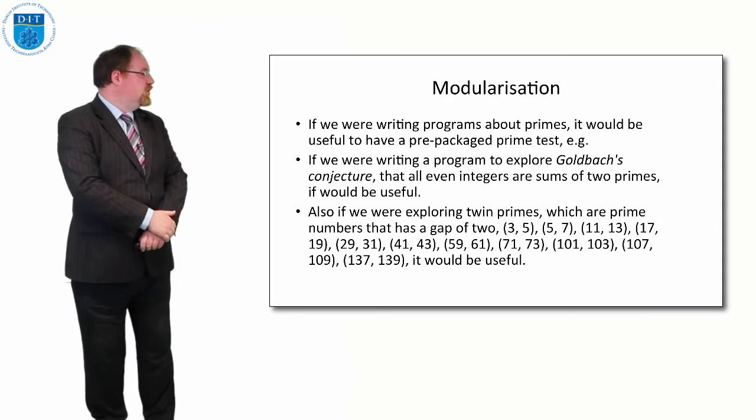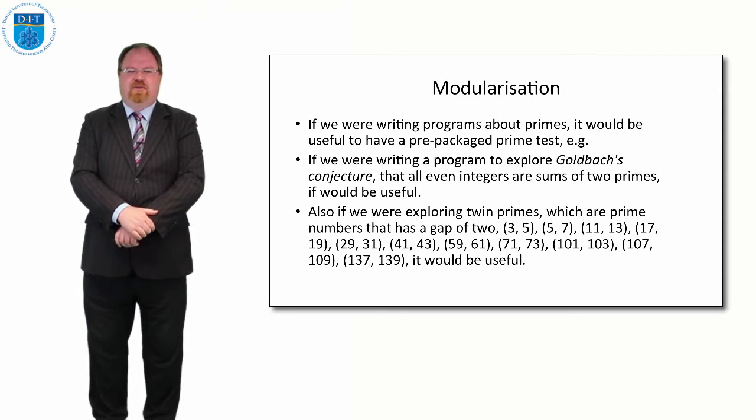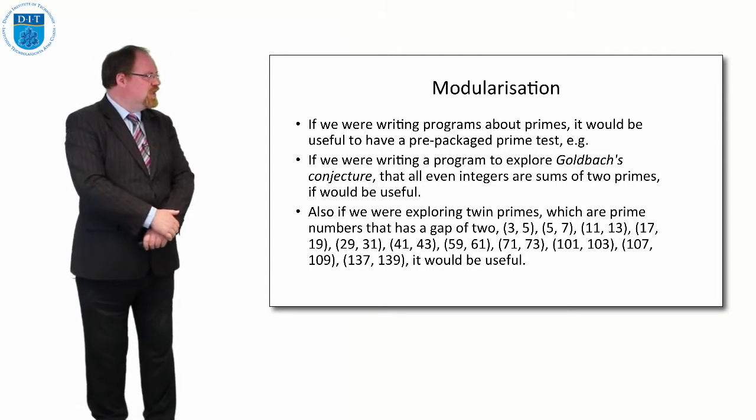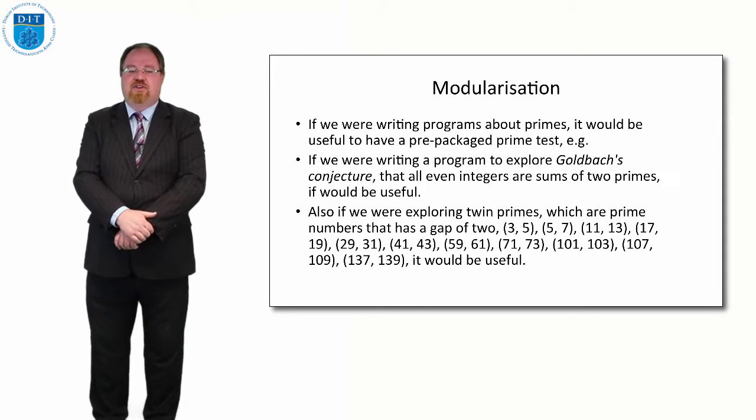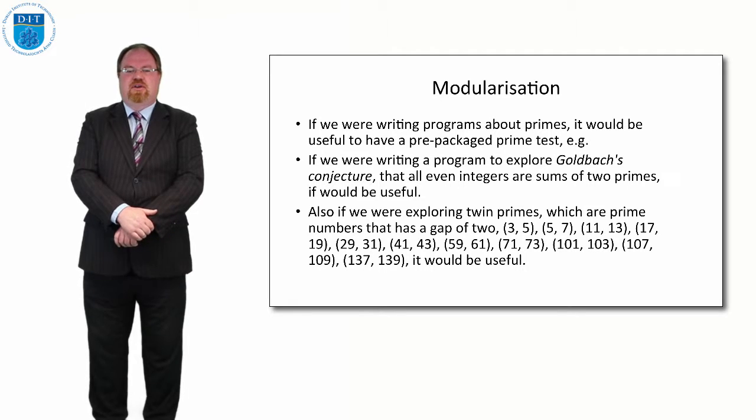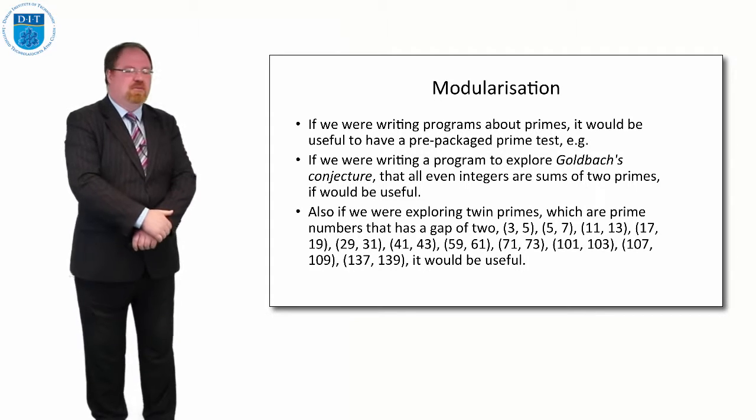Thinking about the Fibonacci or the prime number thing for a moment, there are two cases where I would typically have a prime checker. In maths, there's something called the Goldbach conjecture that says that every even number greater than 2 is the sum of two primes. So 2 is 1 plus 1, 4 is 3 plus 1, 6 is 3 plus 3 which are both primes, 8 is 1 plus 7.